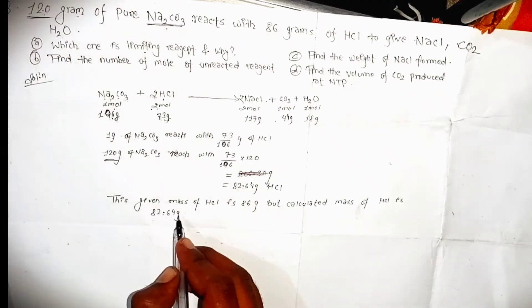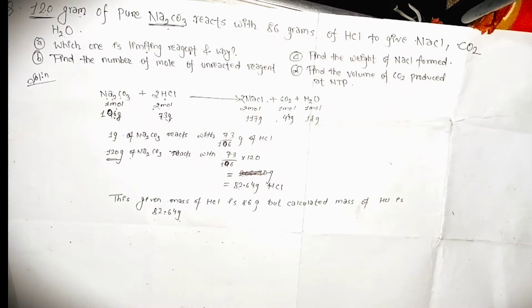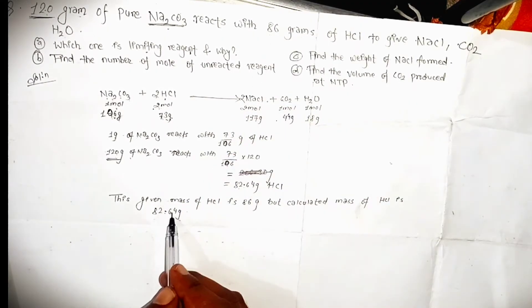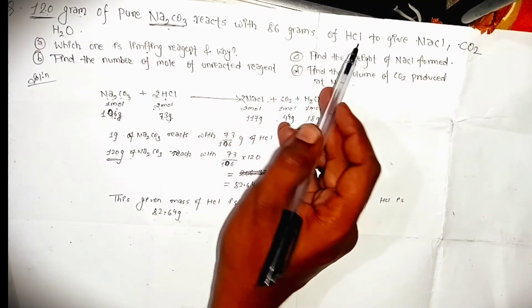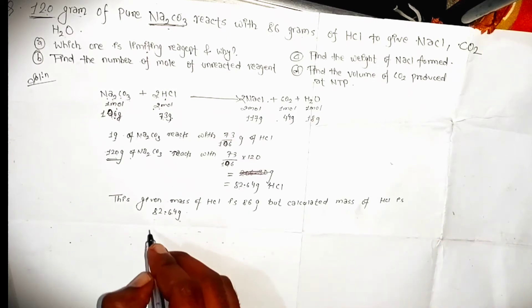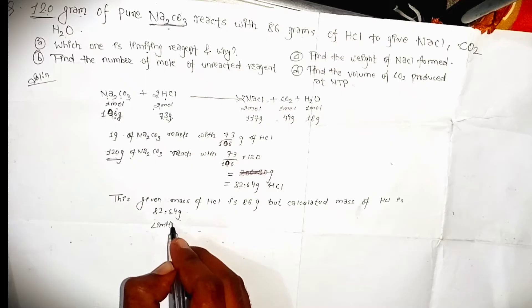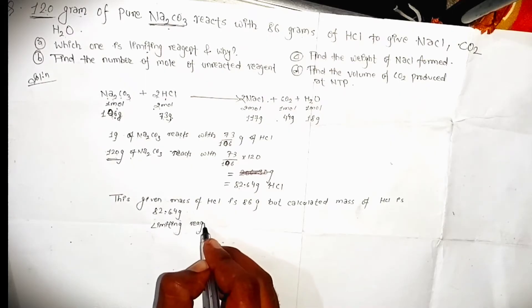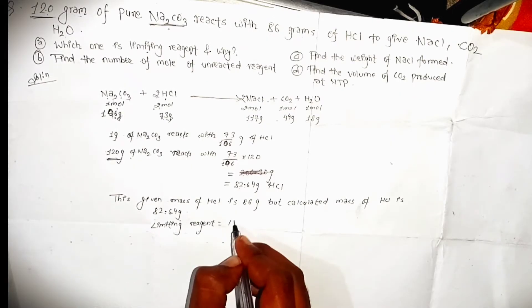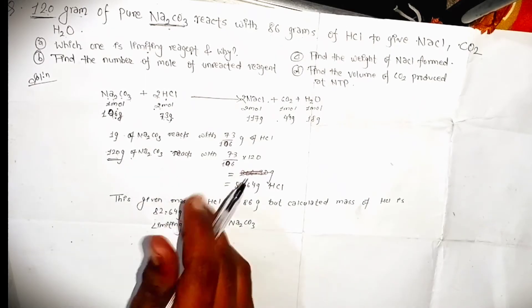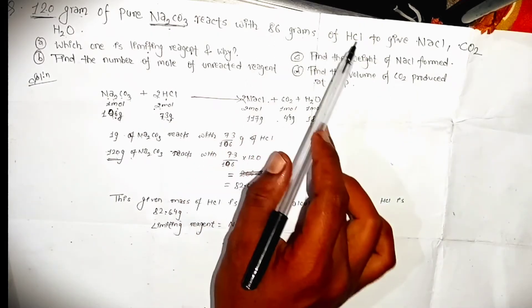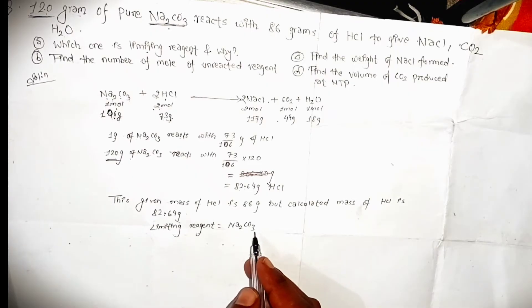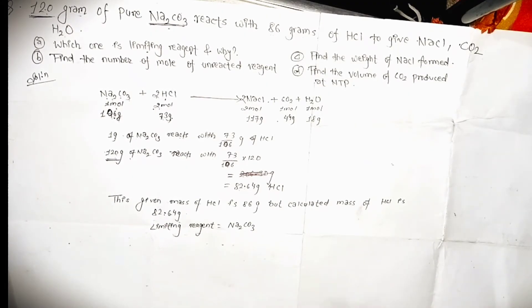In this case, HCl is 82.64 grams and Na₂CO₃ is 120 grams. Given the values, HCl at 82.64 grams is still present, so it is the excessive reagent. The limiting reagent is Na₂CO₃ at 120 grams — it will be fully consumed in the reaction. So the limiting reagent is Na₂CO₃, and HCl is in excess.